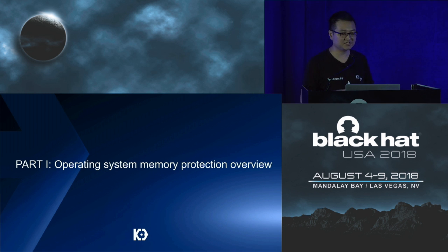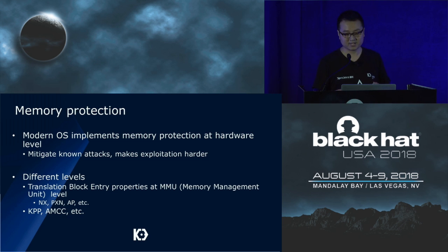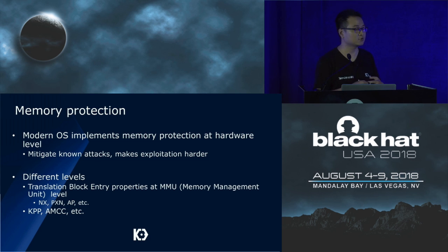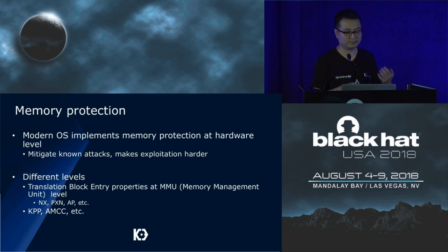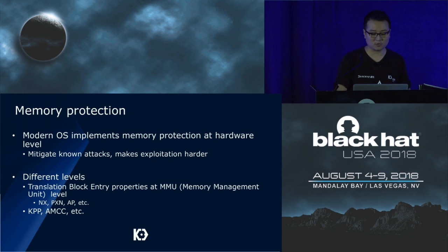The first part is operating system memory protection overview. Modern OSes implement memory protection at the hardware level to mitigate known attacks, introduced at different levels. For example, translation block entry properties at the MMU level include the NX non-executable bit, PXN to prevent execution in user land from the kernel side, and AP bits which indicate access protection such as read-only, write-only, or execute-only memory. There are also mitigations like KPP and AMCC relating to memory protection at a lower level, which are not in scope of this talk.